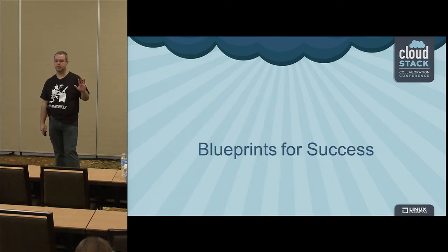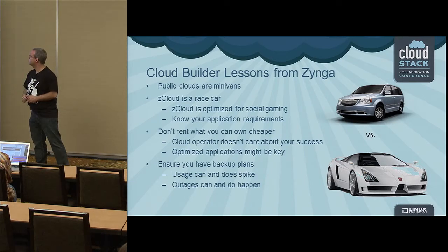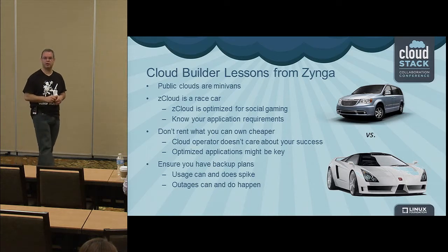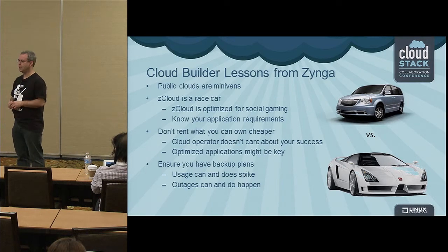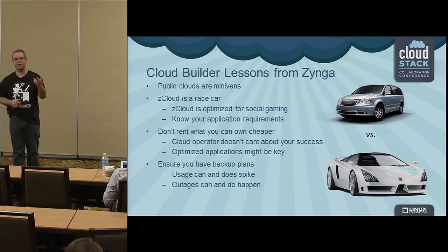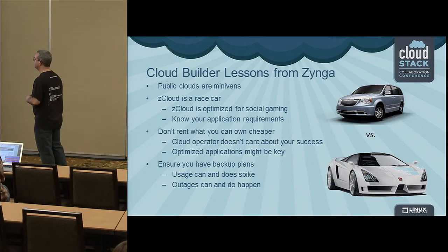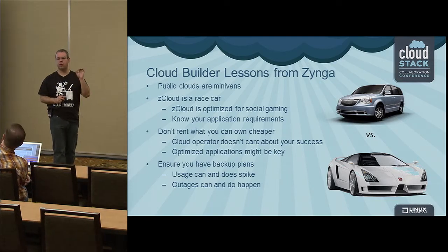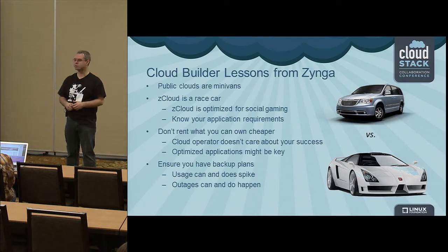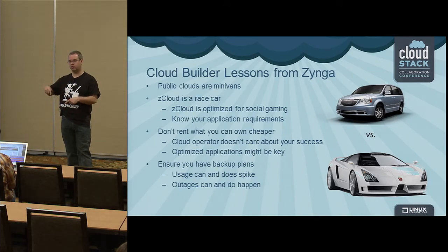Now, we really do want to have a successful cloud. The first thing is to look at some of the clouds out there. I really like the Zynga analogy — a public cloud is like a minivan. Minivans can hold lots of things, go a reasonable speed, and have lots of little features. But they're not tuned for your applications. The Zcloud within Zynga — their analogy is it's a race car. It's purpose-built and tuned for their application set, built on CloudStack, optimized for social gaming, and built around the requirements of their applications — things like in-memory databases and single-digit latency between compute nodes. These are things they couldn't control in a public cloud scenario.